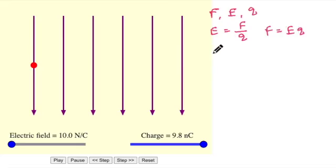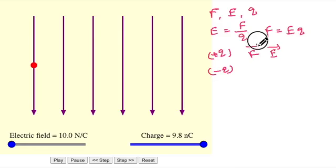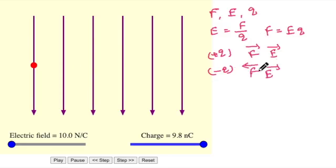Now, we know that there are two possibilities for the charge — it can be a positive charge or a negative charge. If it is a positive charge, the force will be in the same direction as the electric field. If it is a negative charge, the force will be in the opposite direction to the electric field.